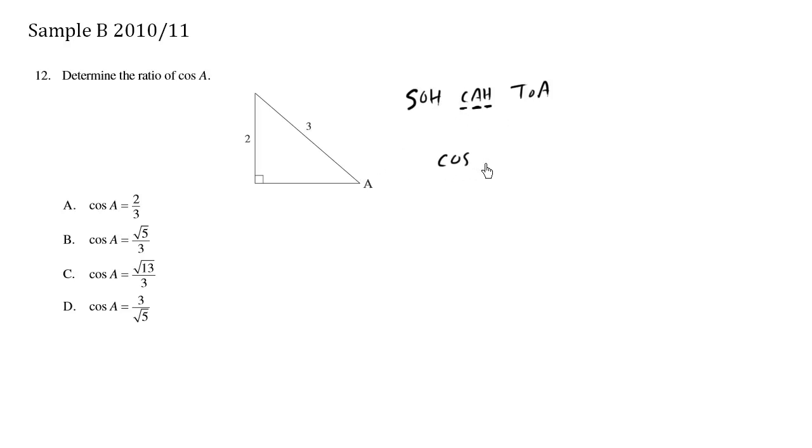So the cosine of A equals the adjacent, which is here, this length here I'll call it x, over the hypotenuse. The hypotenuse is going to be 3. Now we need to solve for x.